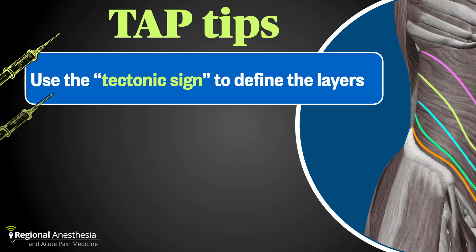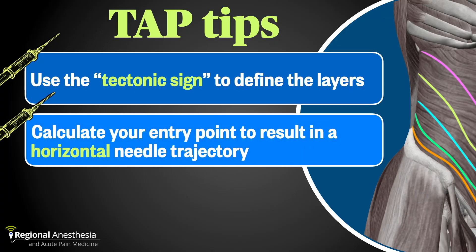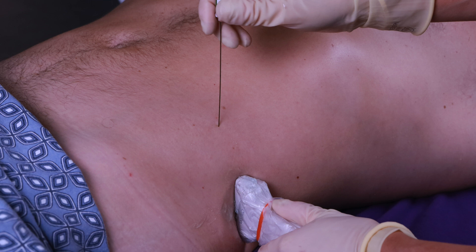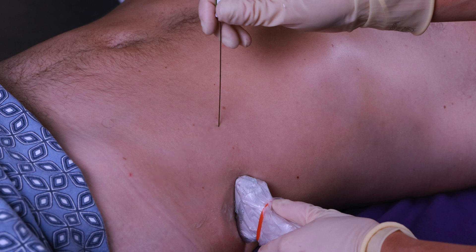Number two: you want to hit the TAP plane at a very shallow angle, because you need to move that needle along. If you have to turn a 60-degree corner after hitting the plane, it's not going to be a satisfying block. Calculate your depth to the TAP plane on the screen, then insert your needle that far out from your probe surface. To hedge for safety, you can always start by aiming laterally at your probe surface, and once you see your needle on screen, walk it down sequentially until you're in the correct plane.